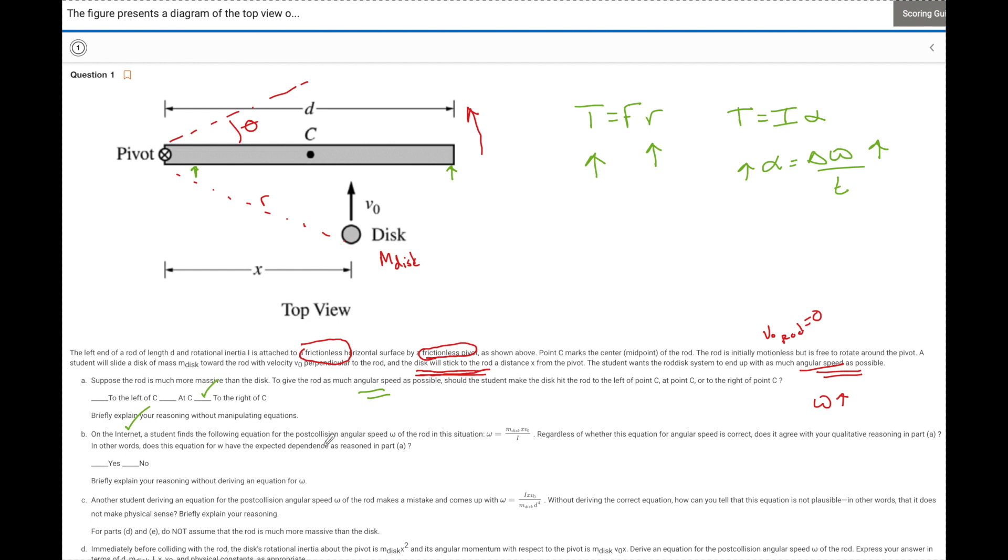The student finds a following equation for the post-collision angular speed and this is what they find on the internet. Who cares if that's right or wrong? And they say that regardless of where the equation for angular speed is correct, so we don't care, does it agree with the quantitative reasoning in part A? So let's see. We said that the further I go from the pivot point, that's going to be the greatest increase in speed. So does this really tell me that? Well yeah, because they're calling X is really the R here. So as I increase X, I'm quote increasing R, increasing torque and blah blah blah.